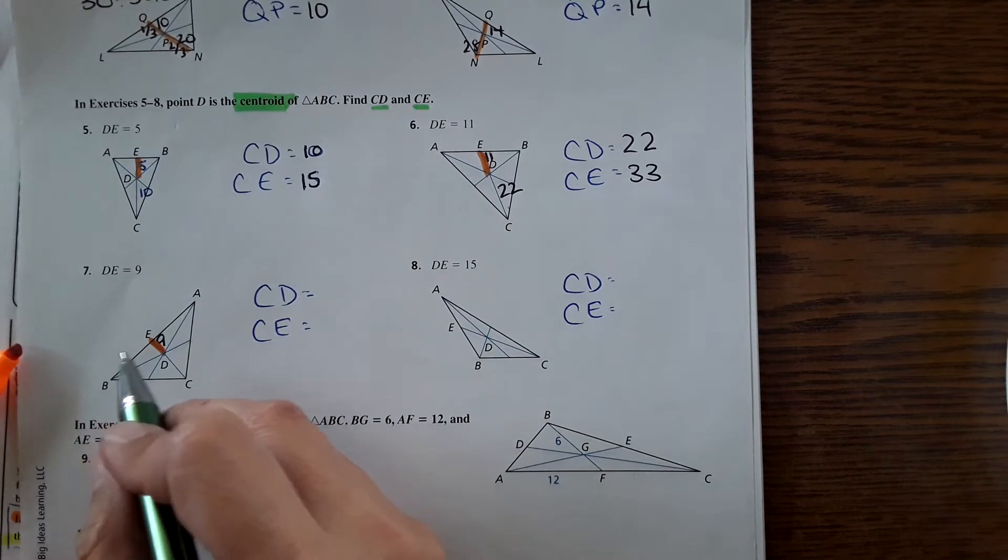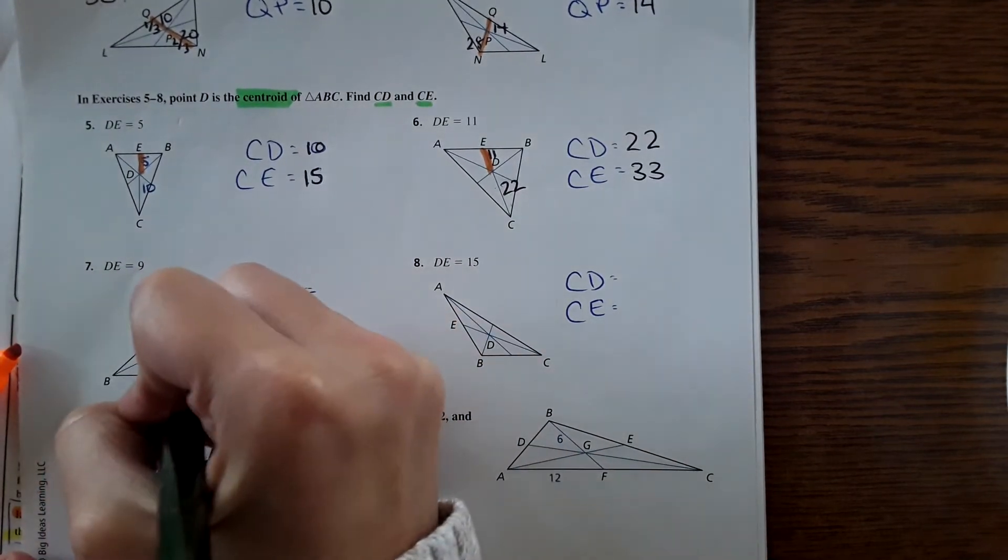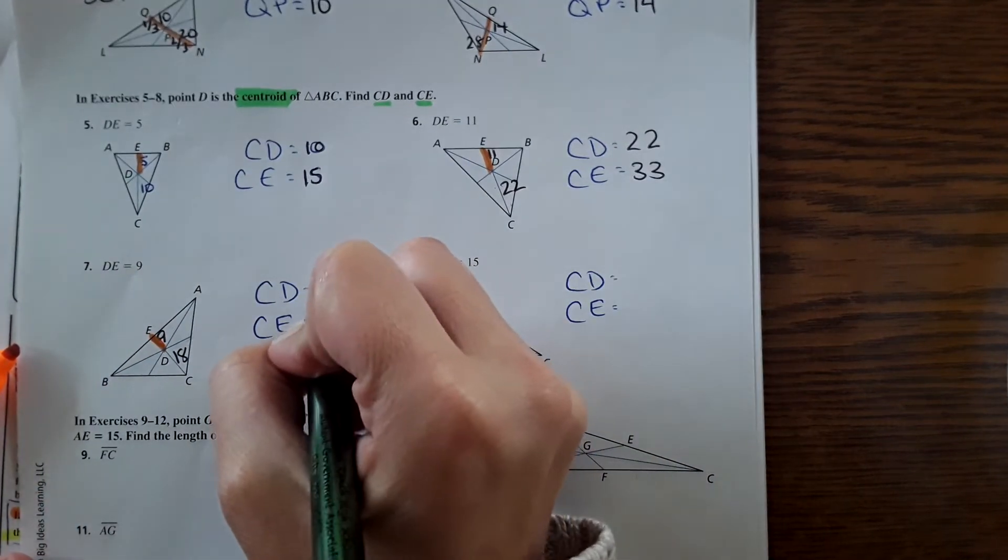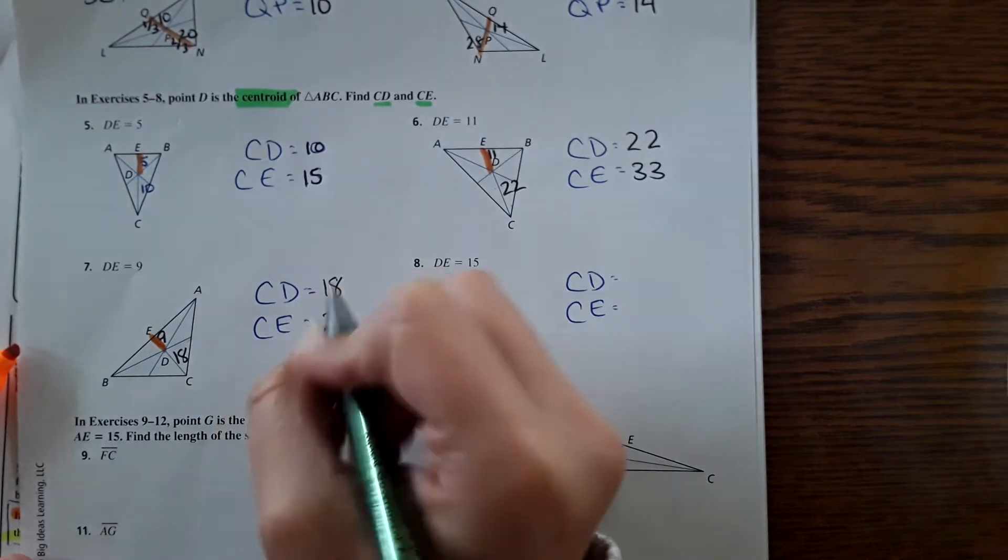So the short side's nine. The longer side would then be 18, and 27 for the whole thing.